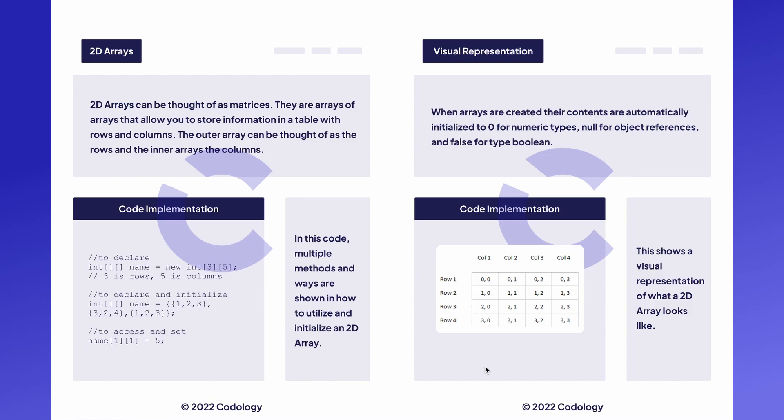In this case we used 3 and 5. To initialize and declare you can also use curly brackets, similarly to how you can with regular arrays. You would just need two sets of curly brackets — one for the outside and one for each individual row.